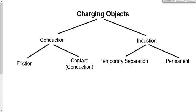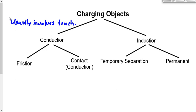On Friday we learned there were two basic ways of charging objects: charging by conduction and charging by induction. The big fundamental difference is that conduction usually involves touching, while induction never involves touching. Conduction usually involves touching, so if you have a situation where two objects are touching, you know it's conduction for sure.